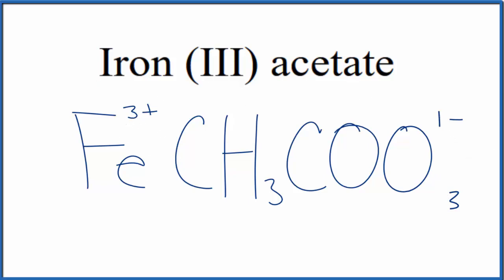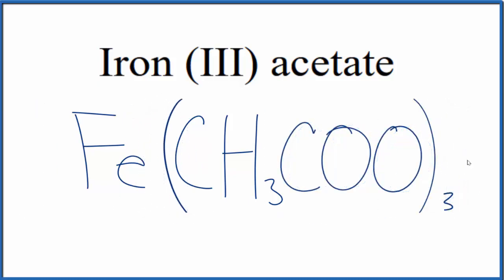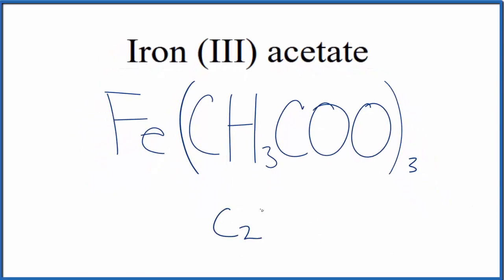We would need to put parentheses around the acetate ion since we have 3 of them. So this is the formula for iron 3 acetate: Fe(CH3COO)3, with the 3 outside the parentheses. Sometimes the acetate ion is written C2H3O2 — it's the same thing, just a different way to write it.